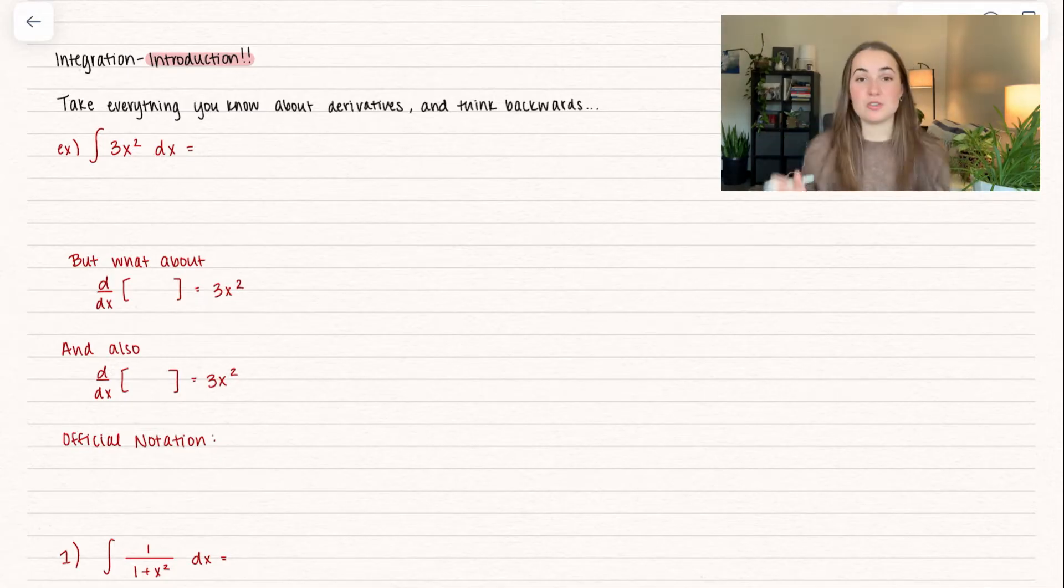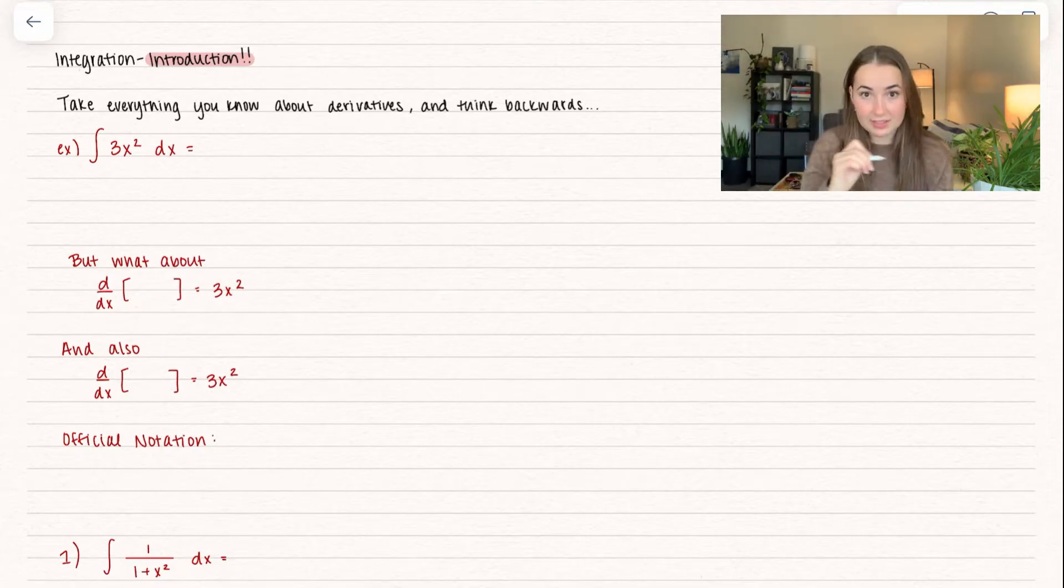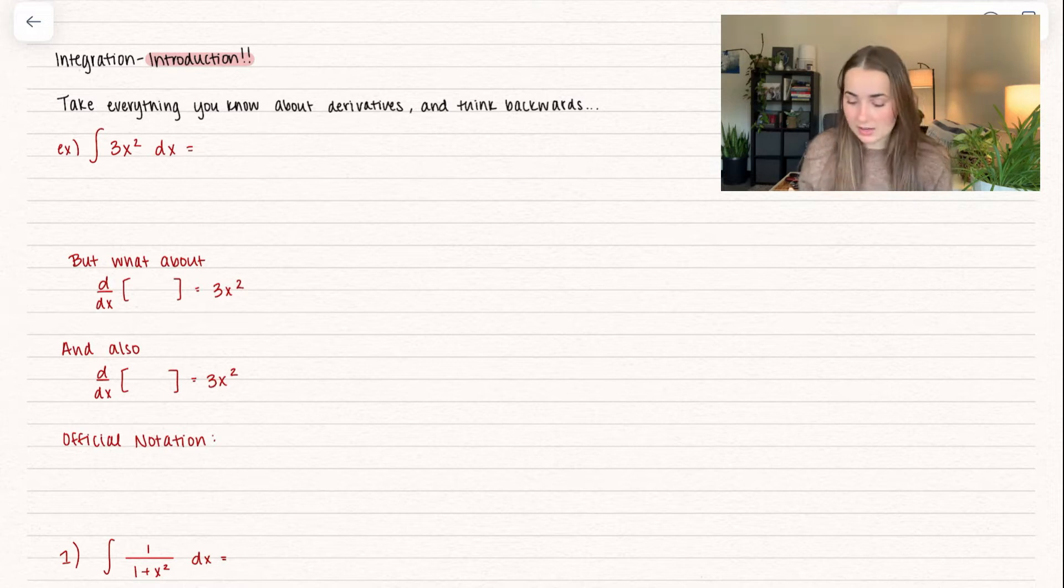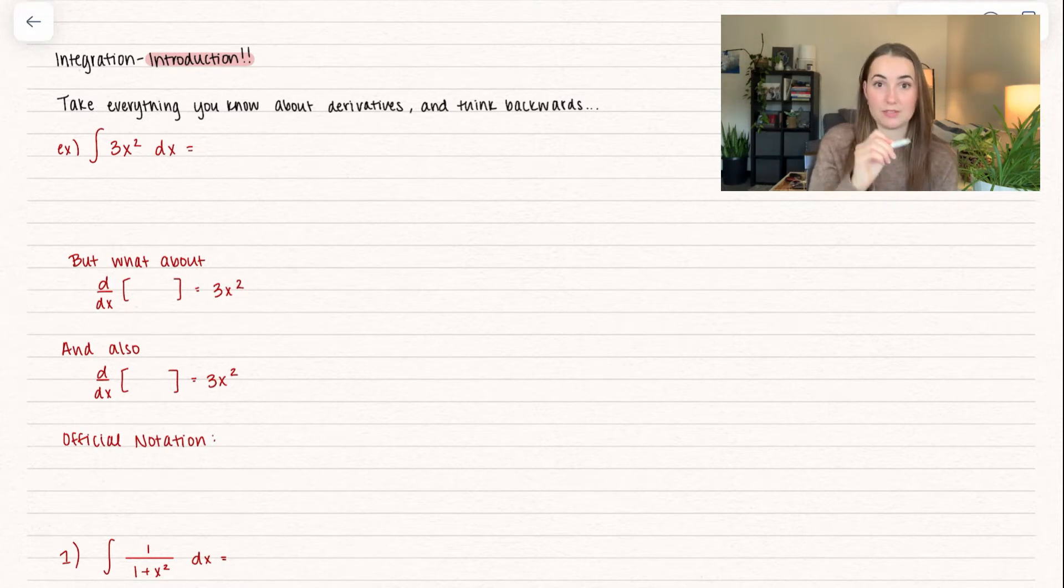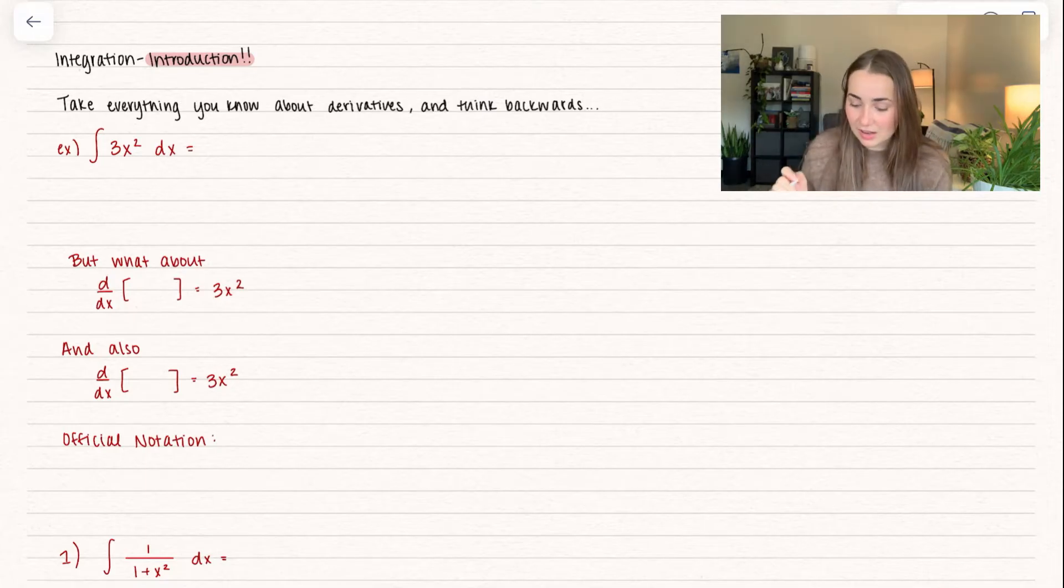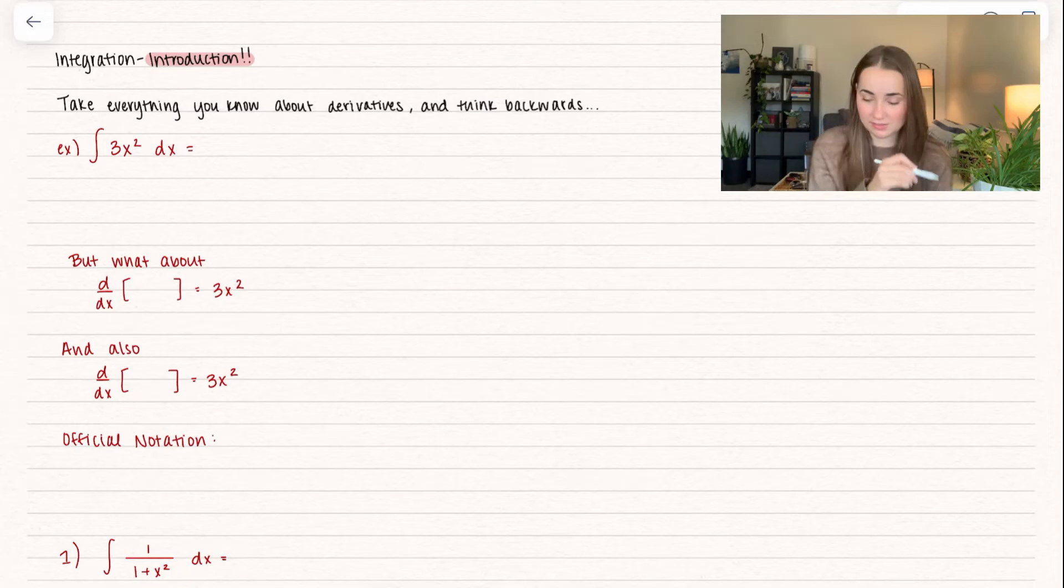Here we have the official notation of an integral, that little squiggly thing, that's the integral. So we have the integral of 3x squared, and that little dx right there, that means we're taking the antiderivative in terms of x. So just like normal derivative notation, d/dx, this is a little bit different. It's with that squiggle line and with normal dx.